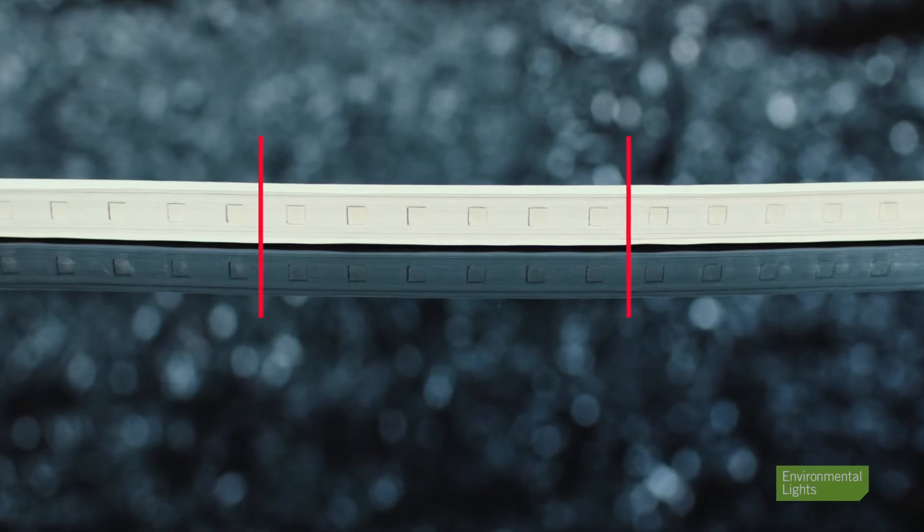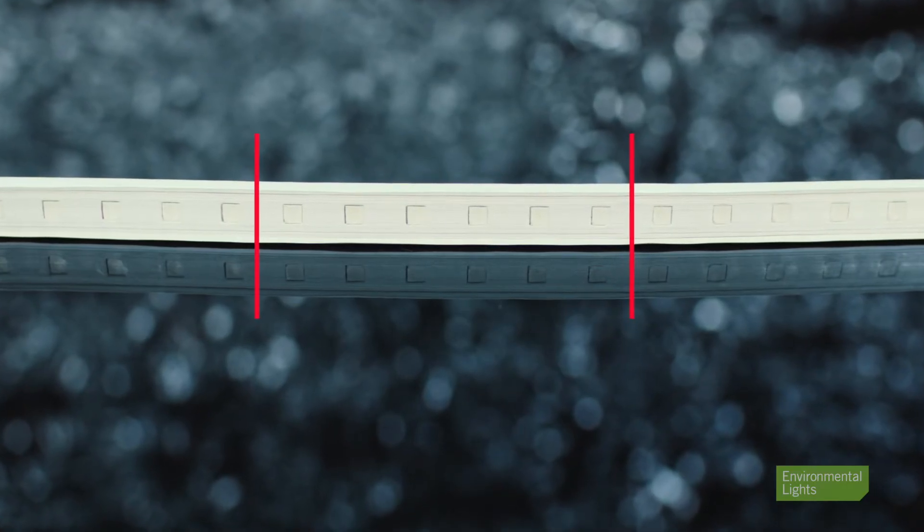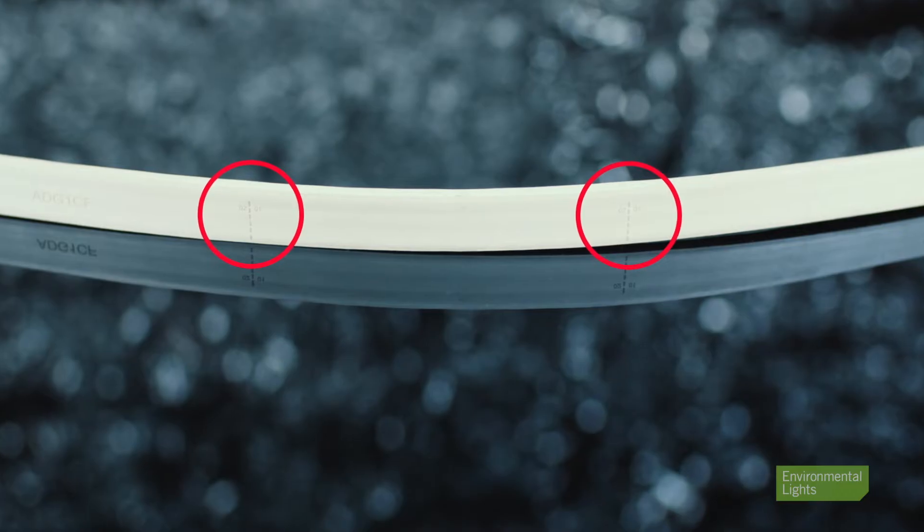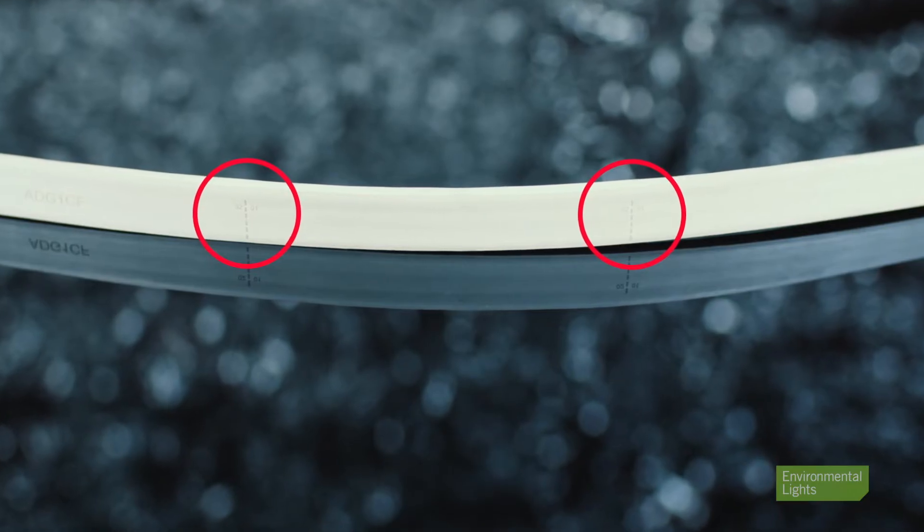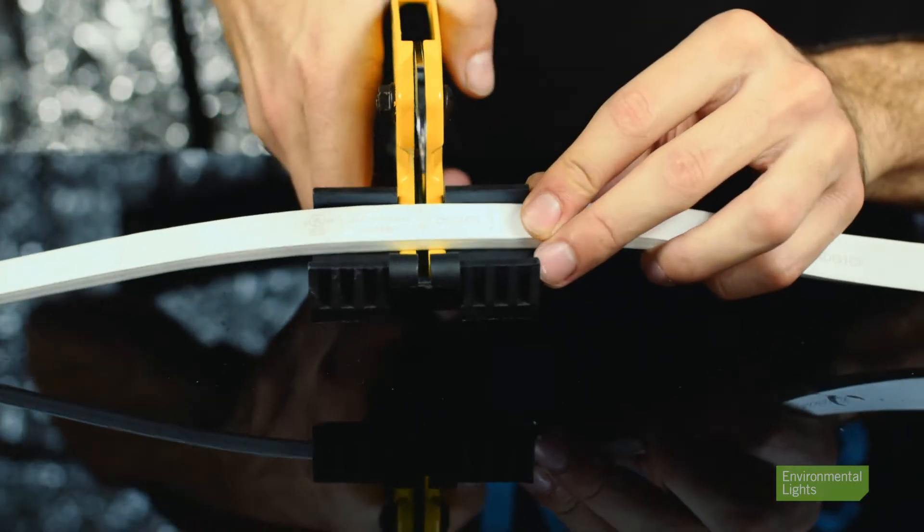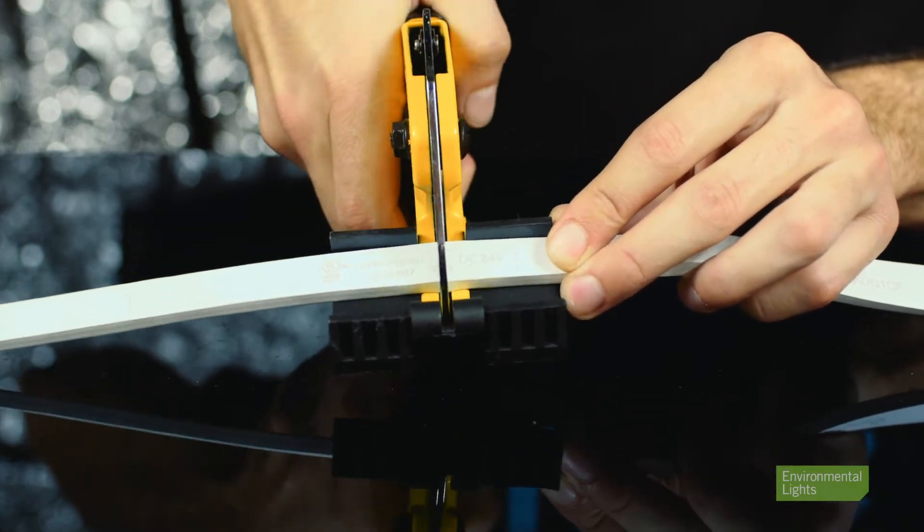LED Super Flat Rope can be cut every six LEDs at specific cut points. Dotted lines on the bottom side of the rope indicate where cuts can be made. Be sure your cut is a straight line perpendicular to the rope light.